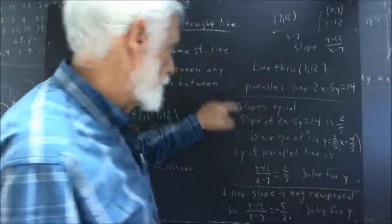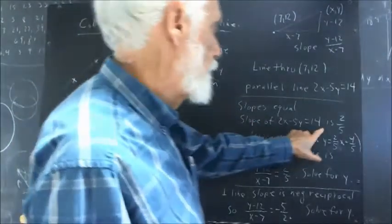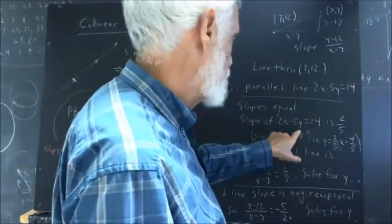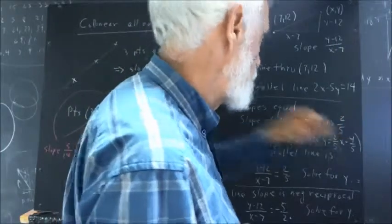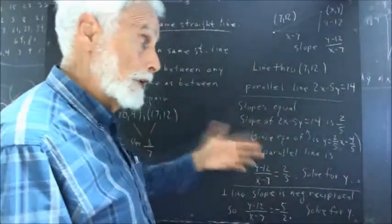Okay, well, so the slopes have to be equal. Well, the slope of this line, as you can easily verify by solving for y, is two-fifths. That's all we need to know about the line is the slope.